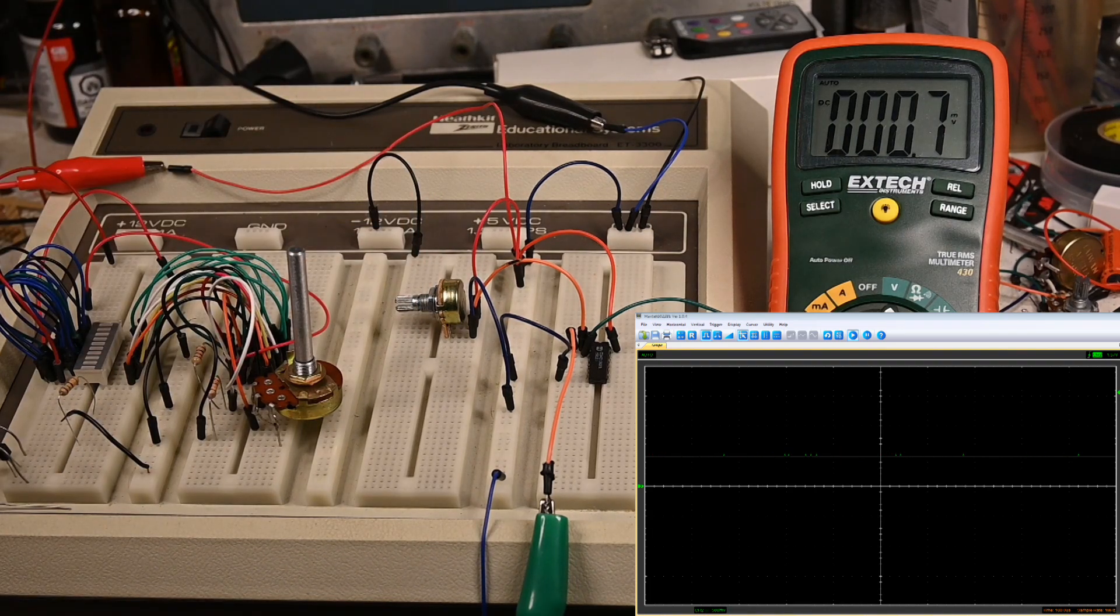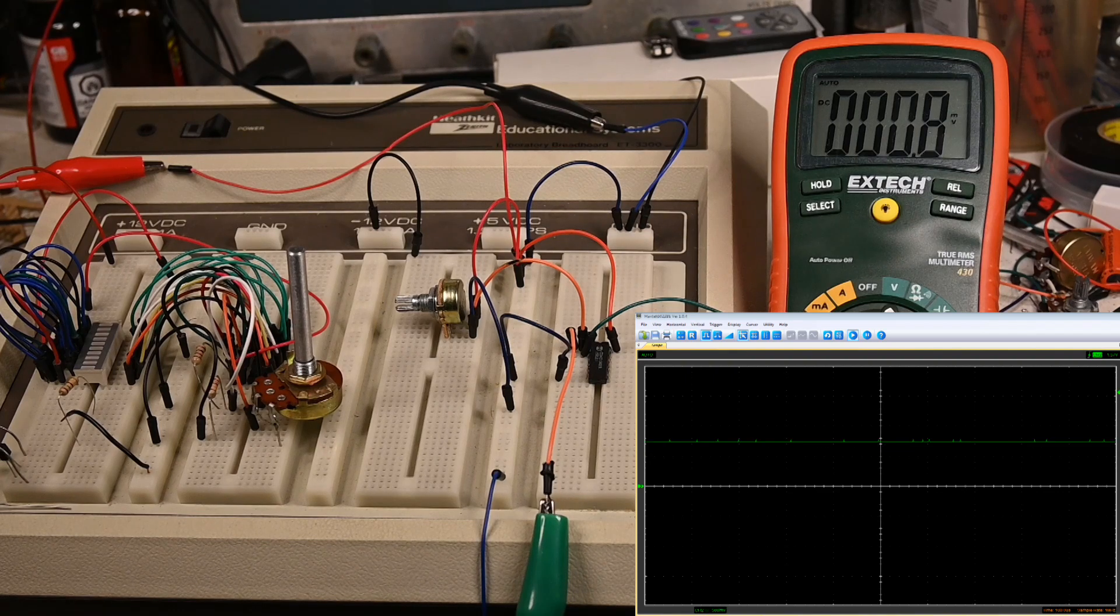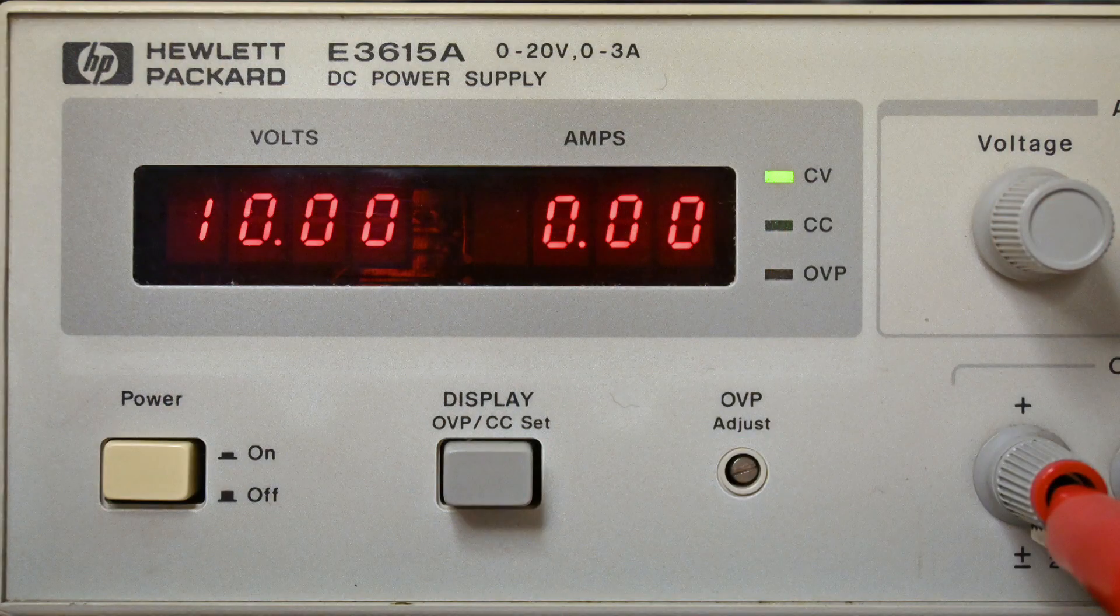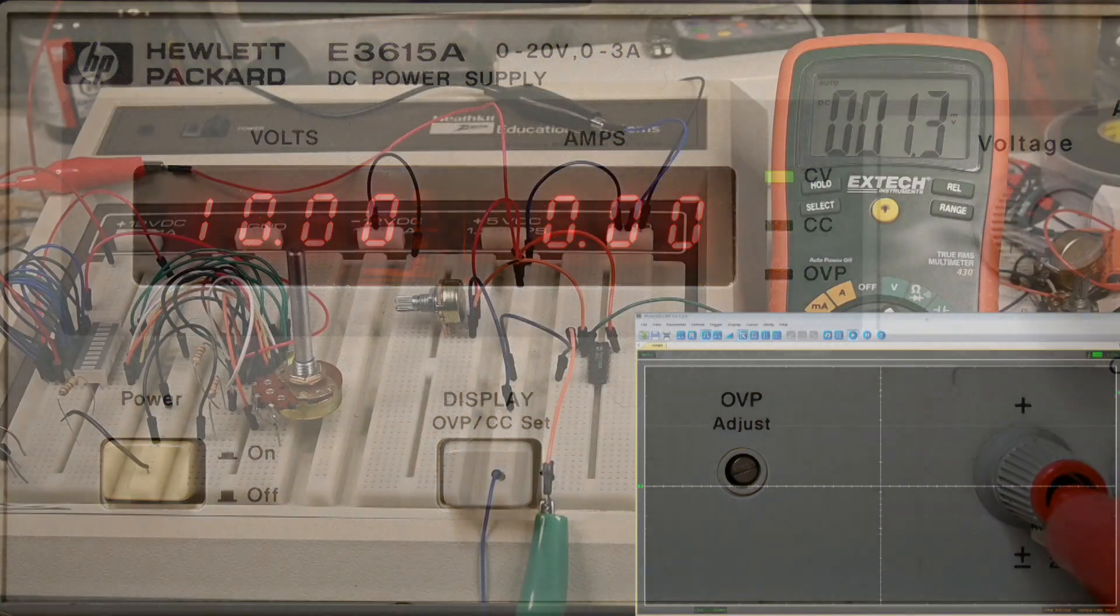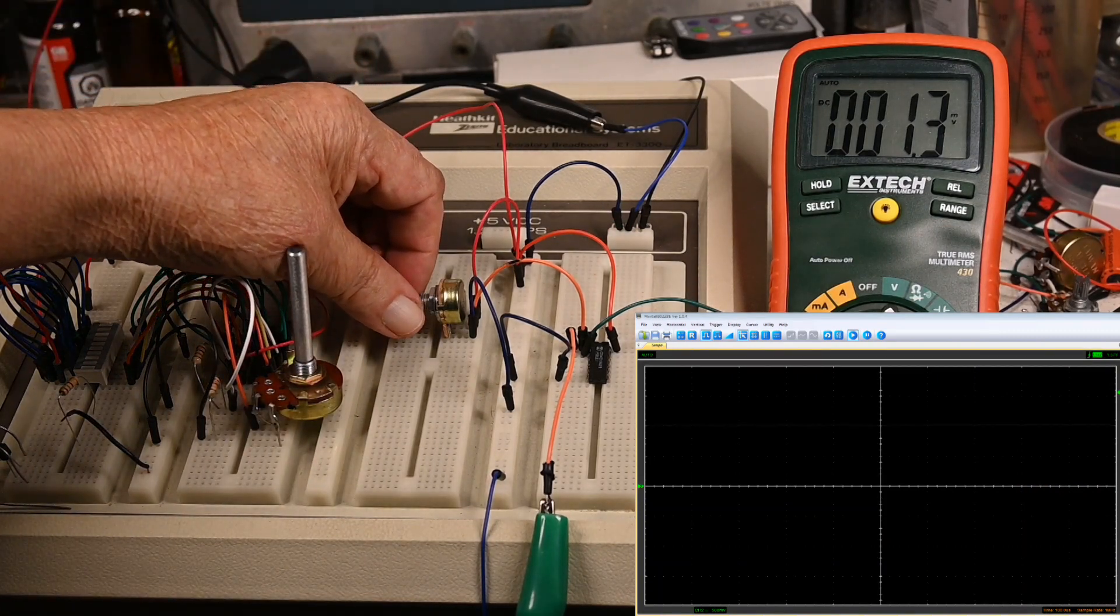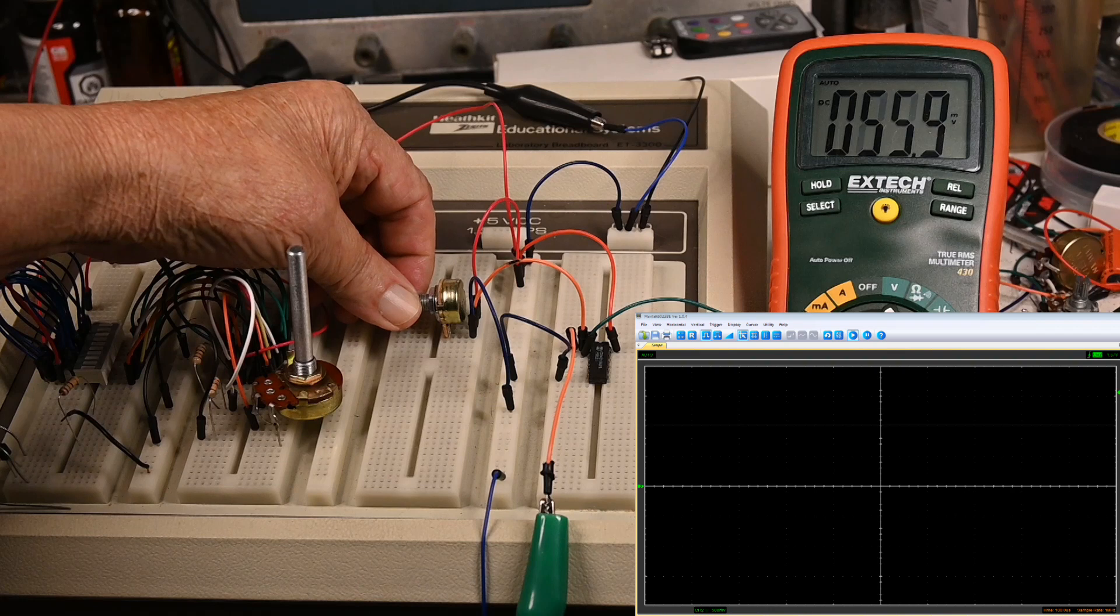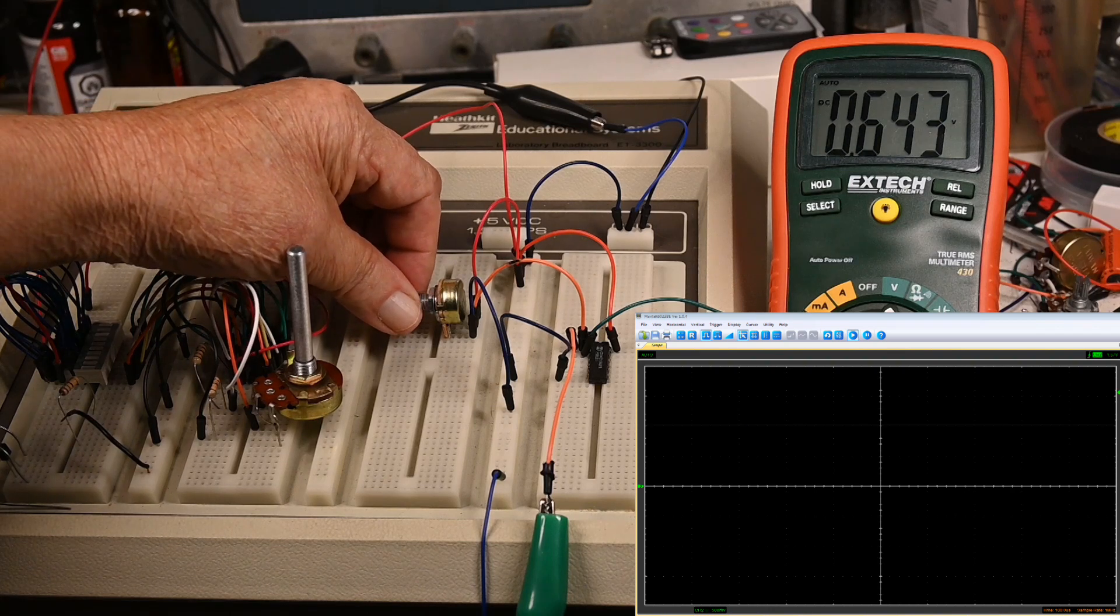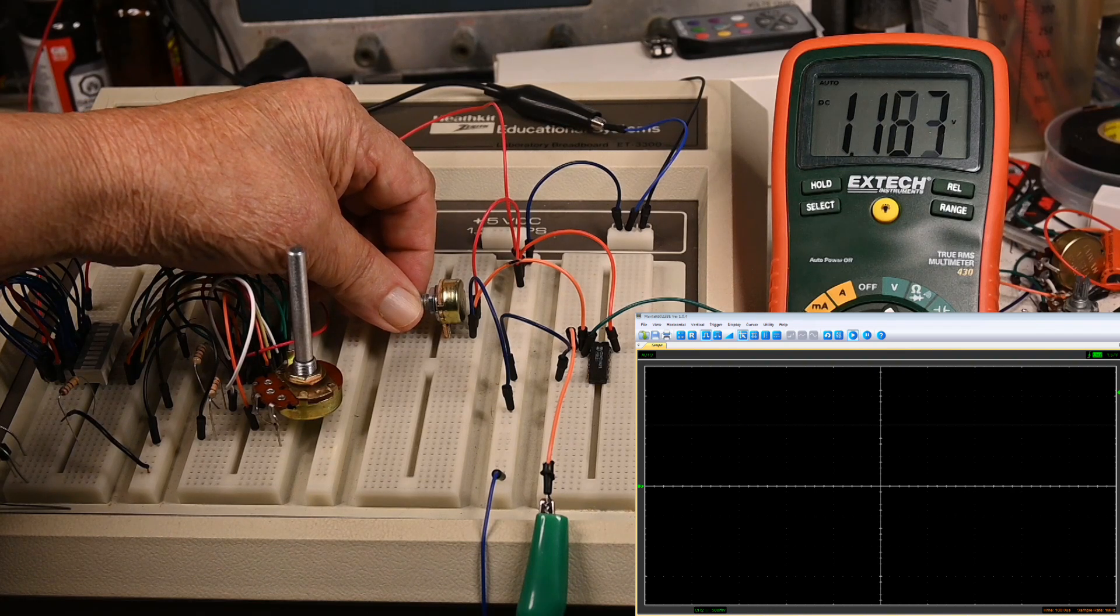Now I'm going to up the voltage to 10. Okay, there's 10 volts. Now we're going to see how it triggers with 10 volts. Again, we'll be watching the scope to see when this triggers.